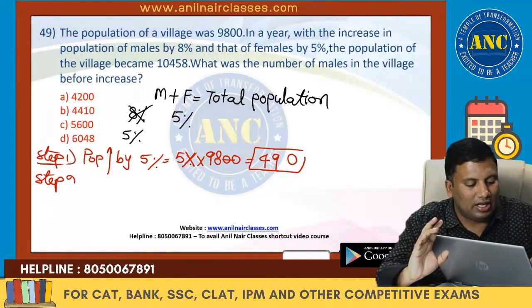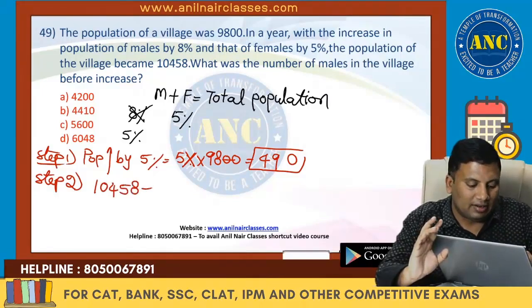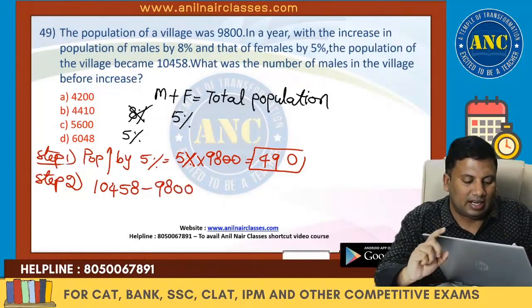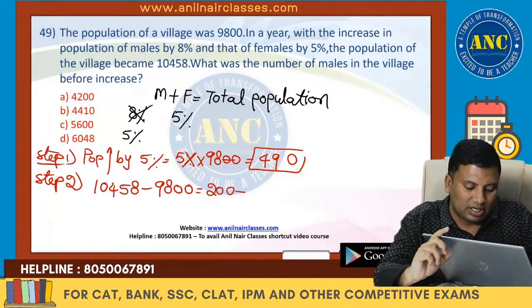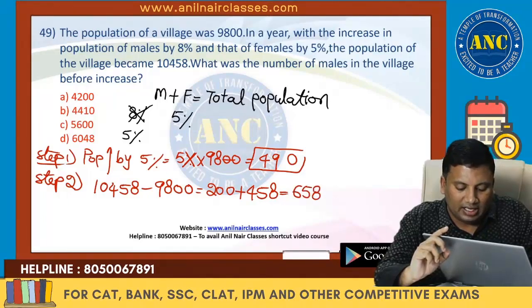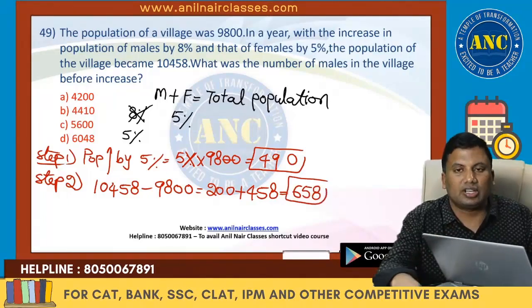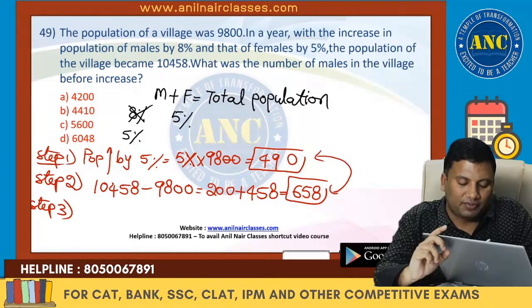Step 3: 490 is actually becoming 658. The extra is 658 − 490 = 168. From where did we get the extra 168? It is because males increase by 8% not 5%, so the extra is 3% of male population. So 3% of male population gives 168; 1% of male population is 56. Therefore male population is 5,600.